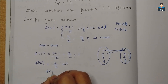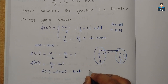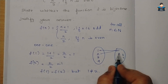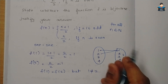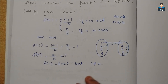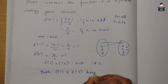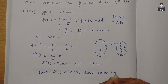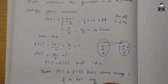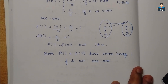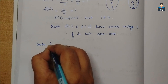So f(1) = f(2) = 1, but 1 ≠ 2. I have 2 pre-images 1 and 2 mapping to the same image 1. Therefore f is not a one-to-one function — both f(1) and f(2) have the same image 1.